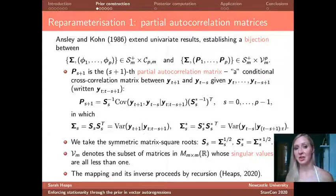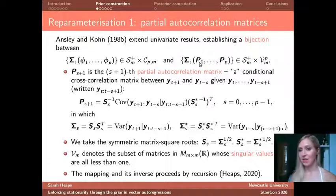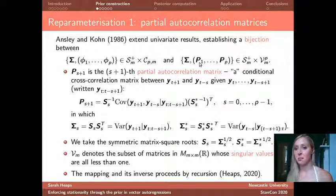So the problem of constraining inference to the stationary region of a vector autoregressive model is very well established in the univariate literature, so in other words when m is equal to one. And what people will do is they just reparameterize in terms of the partial autocorrelations, and then the stationarity condition simply reduces to these partial autocorrelations have to be less than one in absolute value. In 1986, Craig Ansley and Robert Kohn generalized this result for the univariate autoregressions and established a bijection between the parameters of a stationary vector autoregression and this new set of parameters in which these capital P's here are partial autocorrelation matrices. So this is like the vector generalization of a partial autocorrelation.